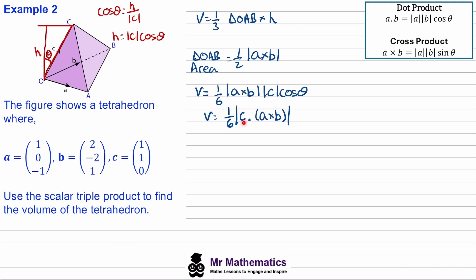And we're given the vectors for C, A, and B here. So we can substitute these in. The volume will be one sixth of the magnitude of C, one, one, zero, dotted with vector A, one, zero, negative one, crossed with vector B, two, negative two, and positive one. We want this magnitude.